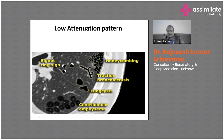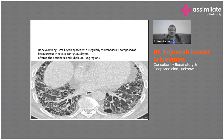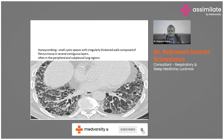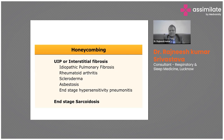Traction bronchiectasis is dilatation of airways, usually in the periphery of the lung, due to underlying fibrosis — the fibrotic lung pulls on the airways, causing their dilatation. On CT, honeycombing appears as multiple subpleural cysts in multiple stacked layers, often accompanied by traction bronchiectasis. Honeycombing is the hallmark of interstitial lung diseases and can be seen in IPF, rheumatoid arthritis, scleroderma, asbestosis, end-stage hypersensitivity pneumonitis, and end-stage sarcoidosis. This overall pattern is called usual interstitial pneumonia (UIP), characterized by the presence of honeycombing.